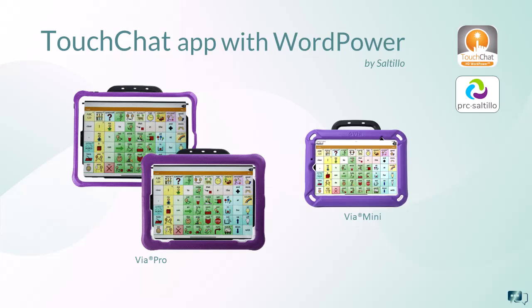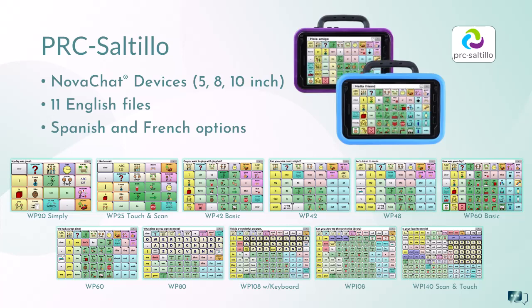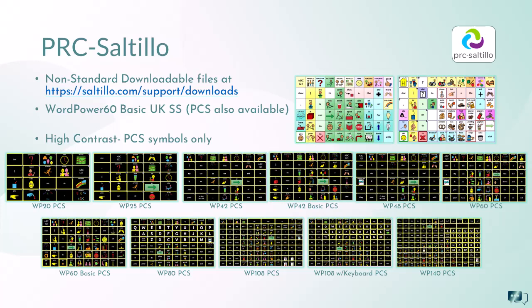All layouts in Touch Chat with Word Power are also available on Via Pro and Via Mini devices by PRC Saltillo. NovaChat devices include the same 11 English files and offer configurations for the Spanish or French vocabulary files shown with Touch Chat. As with Touch Chat, NovaChat devices include page arrangements ranging from 20 to 140 buttons, and symbol sticks and PCS symbols are available. There are also some non-standard files available for download for the NovaChat device, including the 60 basic file for the UK, as well as high contrast PCS symbol files.